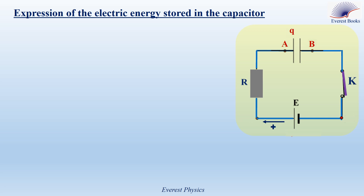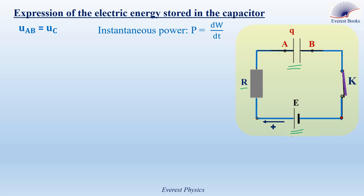Let's determine the expression of the electric energy stored in the capacitor. Consider this circuit: we have an ideal battery of electromotive force E, a resistor of resistance R, and a capacitor with plates A and B. Take Uab as Uc. We will use the general expression of instantaneous power: P = dW/dt, where P is the instantaneous power and W is the energy. For the capacitor, Pc = dWc/dt, where Wc is the electric energy stored in the capacitor and Pc is the rate at which electric energy is stored. In this charging circuit, Pc represents the rate at which electric energy is stored in the capacitor.